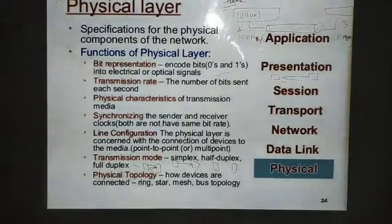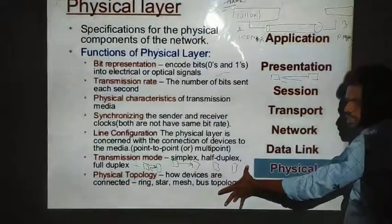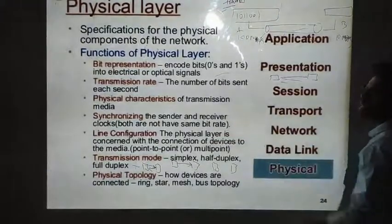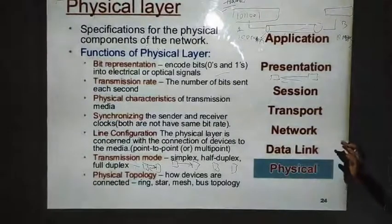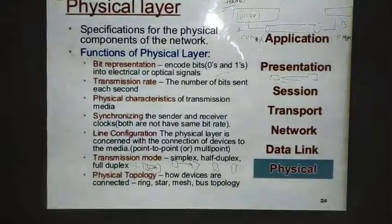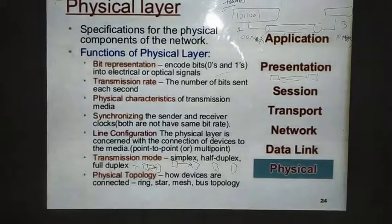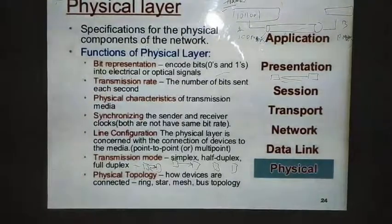The physical layer handles topology selection, data transmission method, system connection, and synchronization between fast senders and slow receivers (and vice versa). This layer is responsible for transmitting data in a flexible manner so that data can be sent from one system to another without loss.